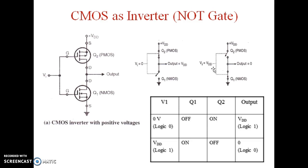For input equal to VDD, that is logic 1, PMOS works as an open circuit and NMOS works as a closed circuit. So output is GND, that is equal to low, which is mentioned here as input is logic 1. Q1 is on, Q2 is off, and output is 0, that is logic 0.